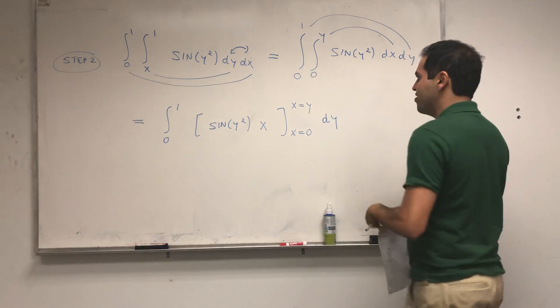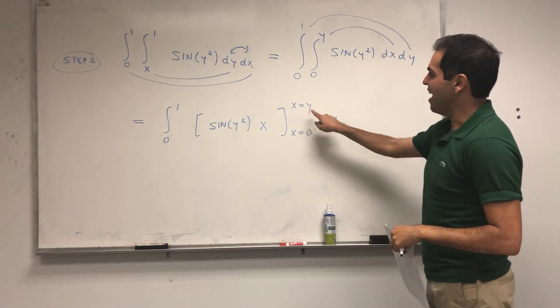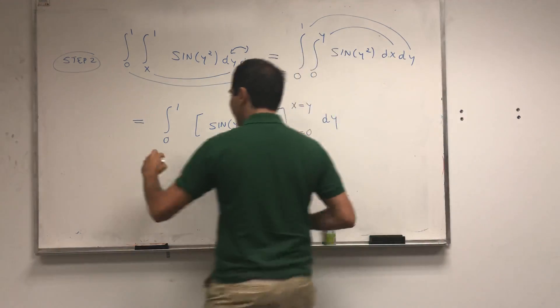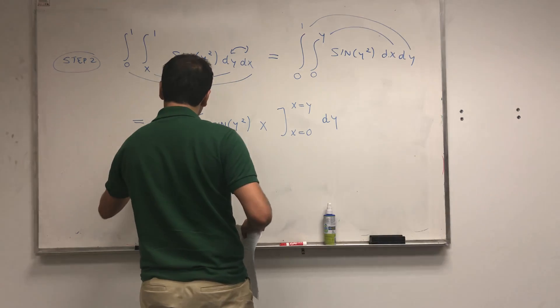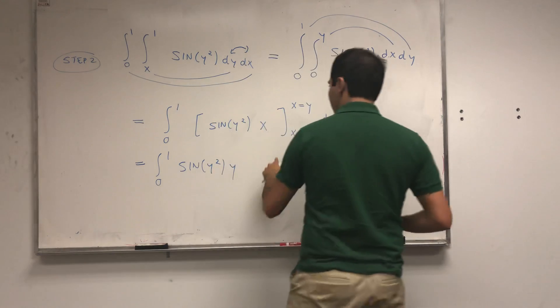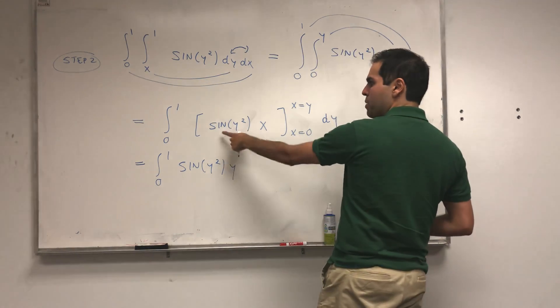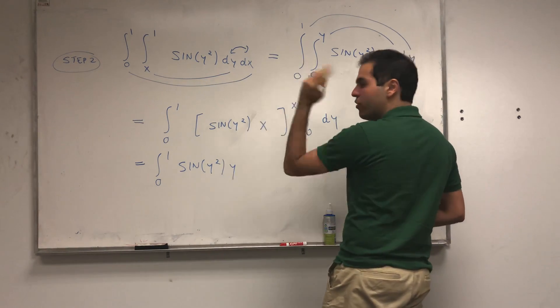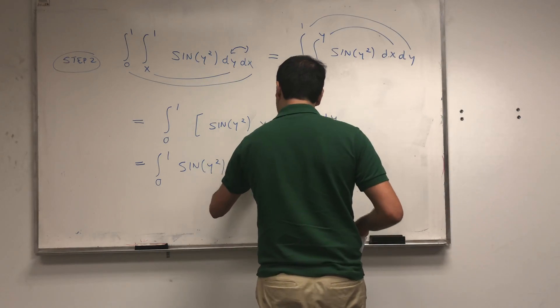dy. And so all we have to do is replace x with y here, so this becomes integral from zero to one of sine y squared y, and for the other term it becomes sine y squared zero, which is just zero dy.